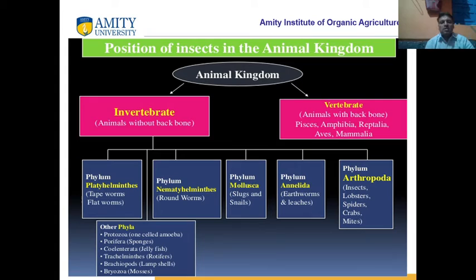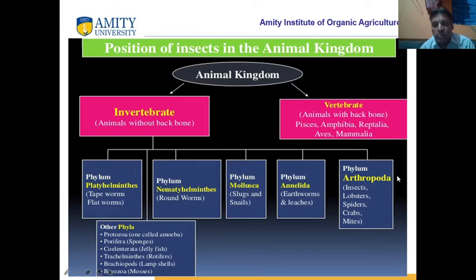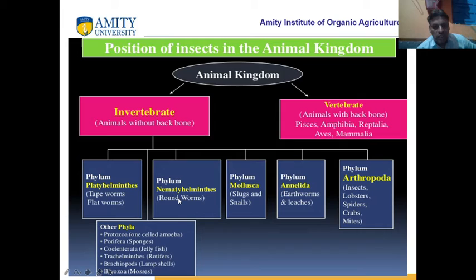What is the position of insects? The animal kingdom is in two parts: invertebrates and vertebrates. Vertebrates means backbone. Insects do not have a backbone like human beings — there is no backbone. So insects fall in the invertebrates. Under invertebrates, there are many phyla, like Platyhelminthes — flat worm.